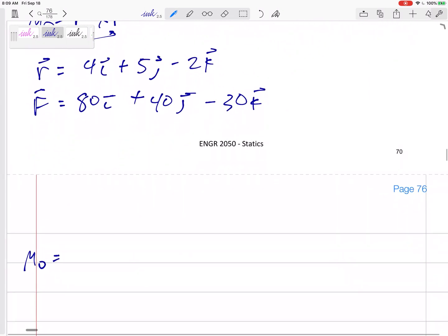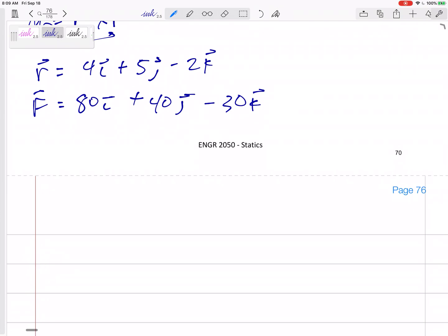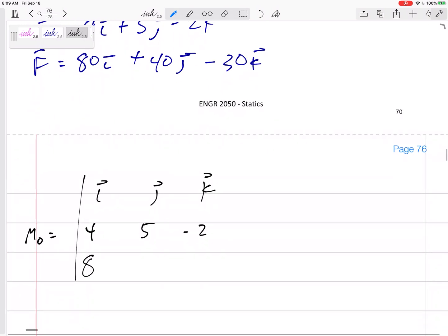So the moment about O, go back to black. The moment about O, i, j, k, 4, 5, negative 2, 80, 40, negative 30.